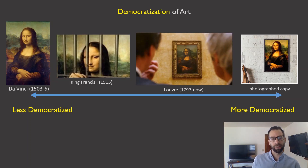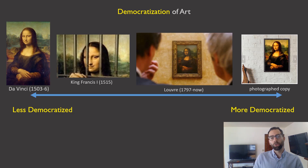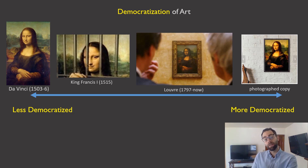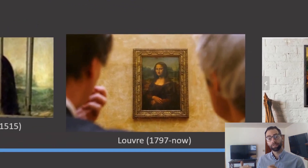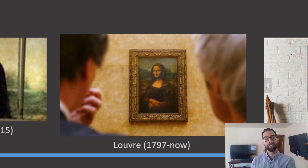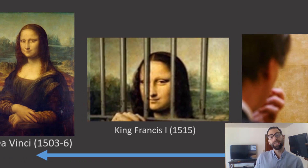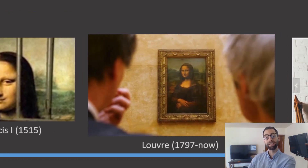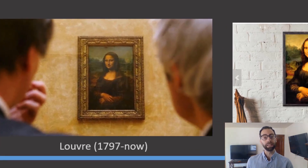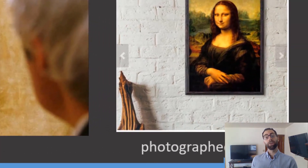Benjamin shows us that the development of photography allowed us to move from a less democratized to a more democratized ability to encounter artworks. He reminds us that even the development of museums to house famous paintings is itself a fairly recent development. Before the Mona Lisa was inducted into the Louvre Museum in 1797, it was protected under King Francis I — it wasn't for everyone.